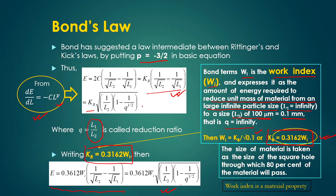This is Bond's equation, based on which you can calculate the energy required for reducing size from a fixed feed size to a product size. The work index Wi is a material property: since ductility and strength differ between materials, the energy required from infinite size to 100 micrometers will be different for different materials, giving a different work index. You have to know the work index for a particular material to calculate the energy requirement.